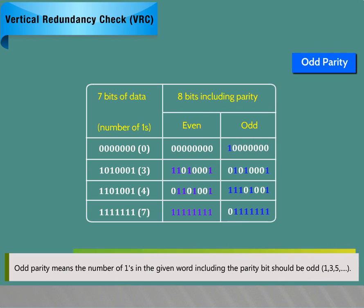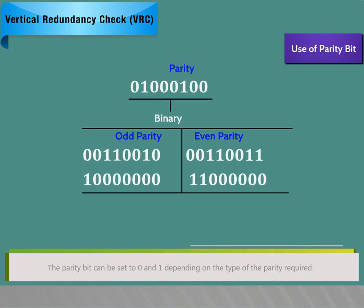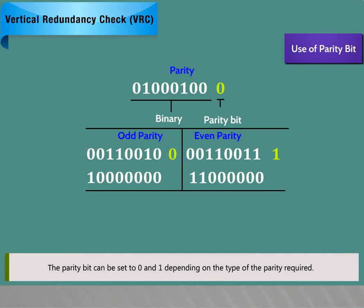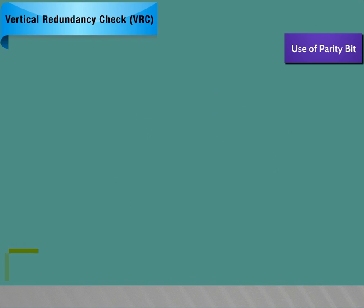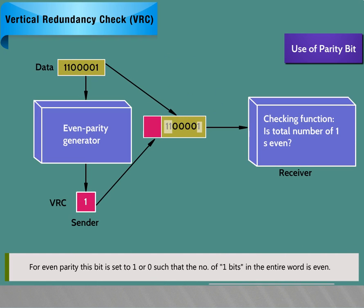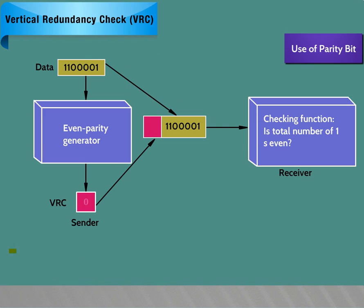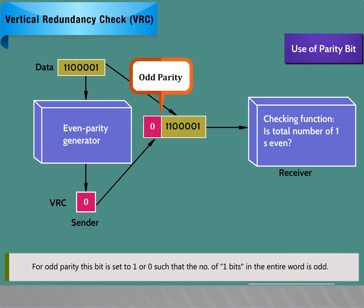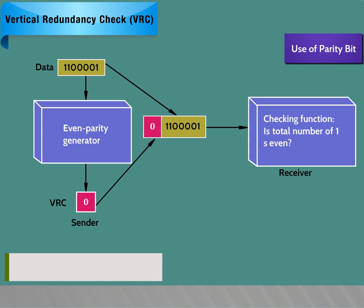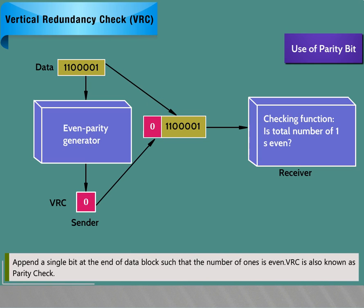Odd parity means the number of ones in the given word including the parity bit should be odd, i.e. 1, 3, 5 and so on. The parity bit can be set to 0 or 1 depending on the type of parity required. For even parity, this bit is set to 1 or 0 such that the number of one bits in the entire word is even. For odd parity, this bit is set such that the number of one bits is odd. VRC is also known as parity check.